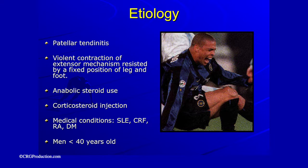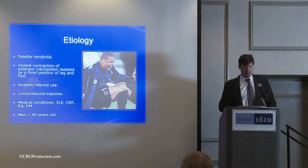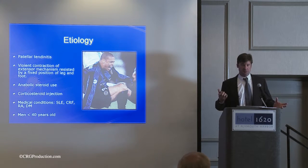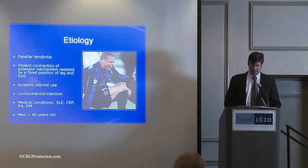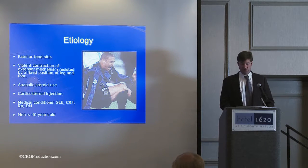Corticosteroid injections are contraindicated for patella tendonitis because they can lead to patella tendon rupture — just like with the Achilles tendon or the distal biceps, we never inject these tendons with poor blood supply because a patella tendon rupture is a pretty devastating injury. Causes of patella tendon ruptures include pre-existing patella tendonitis, which weakens the tendon enough that it can tear during a violent contraction. Anabolic steroid use builds muscle without increasing tendon size, so you can end up overloading the tendon. Injections into the tendon greatly increase rupture risk.